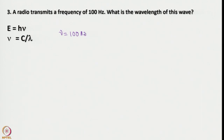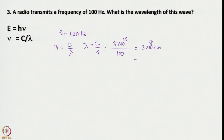So ν equals c divided by λ, therefore λ equals c divided by ν. This corresponds to c = 3×10¹⁰ centimeters divided by 100, which gives 3×10⁸ centimeters, and converting this into meters gives 3×10⁶ meters. One can convert these things very nicely, provided we remember the equation — very easy to remember.